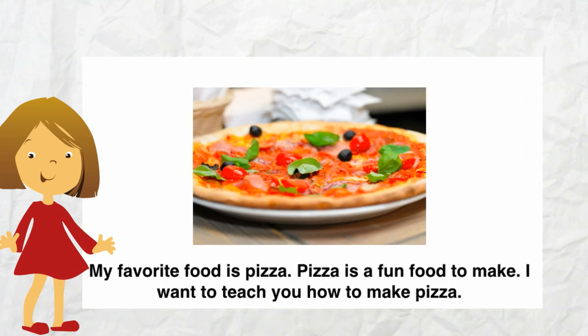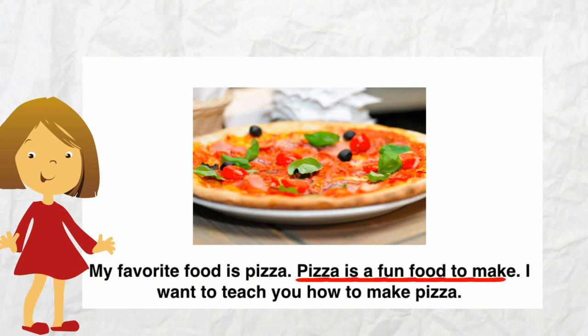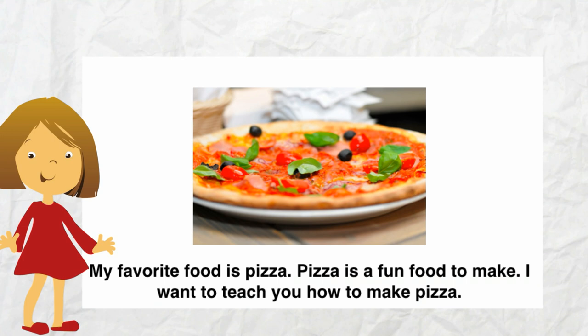Let's try to figure out the author's purpose on the next few pages. This is the first page of a book written by a chef. It is about pizza. It says: my favorite food is pizza. Pizza is a fun food to make. I want to teach you how to make pizza. We can tell by reading her words that the author's purpose is to teach us how to make pizza. The words in the book told us exactly why the author wrote the book. That was easy!